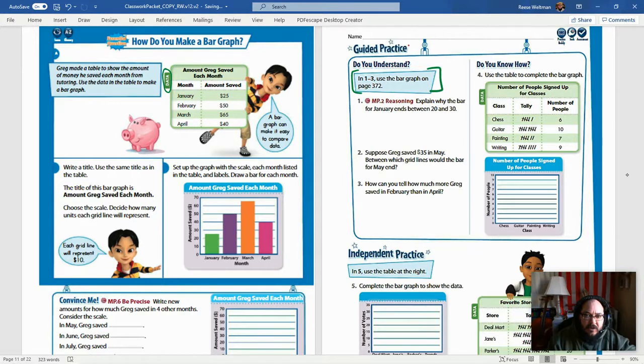Let's take a quick look at page 372 here because it definitely is something we need to look at for the first three questions over here on page 373. Let's look at this table. Now sometimes you'll see this called a table, sometimes called a chart, but this here is data, that means that is the information that you're being given. This is important information. It says Greg made a table to show the amount of money he saved each month from tutoring. Use the data in the table to make a bar graph. And I always remind you guys, read all of the information on the page.